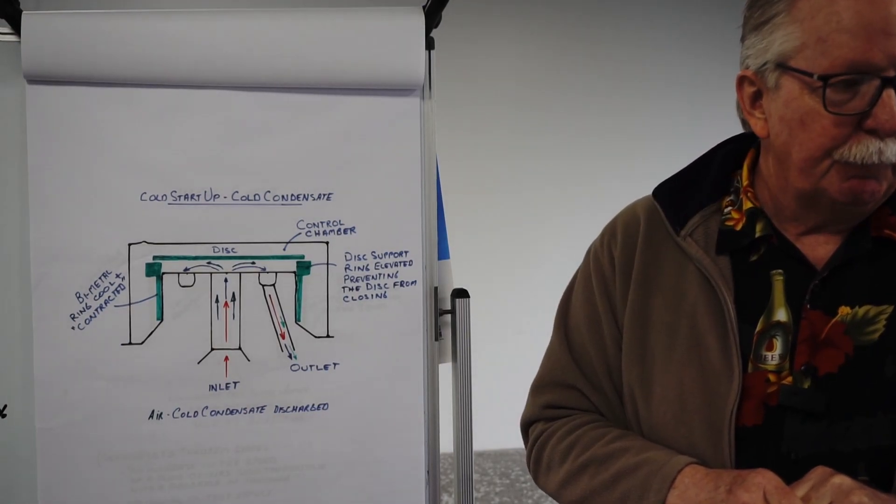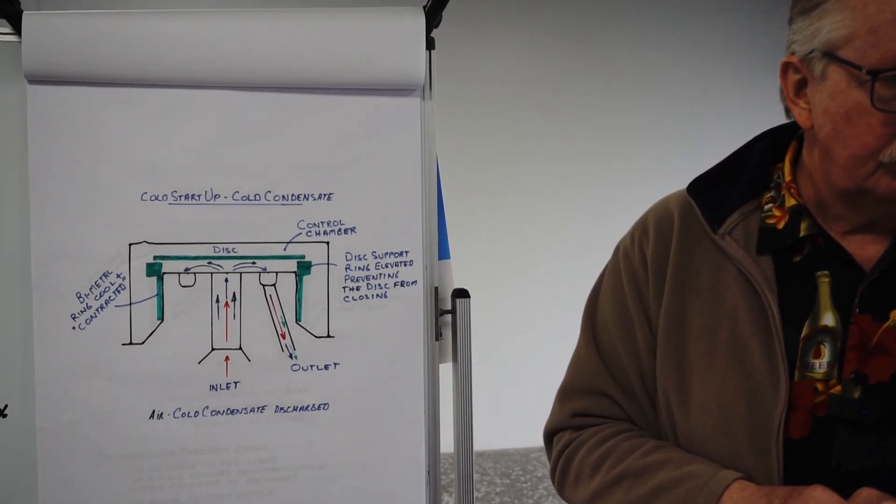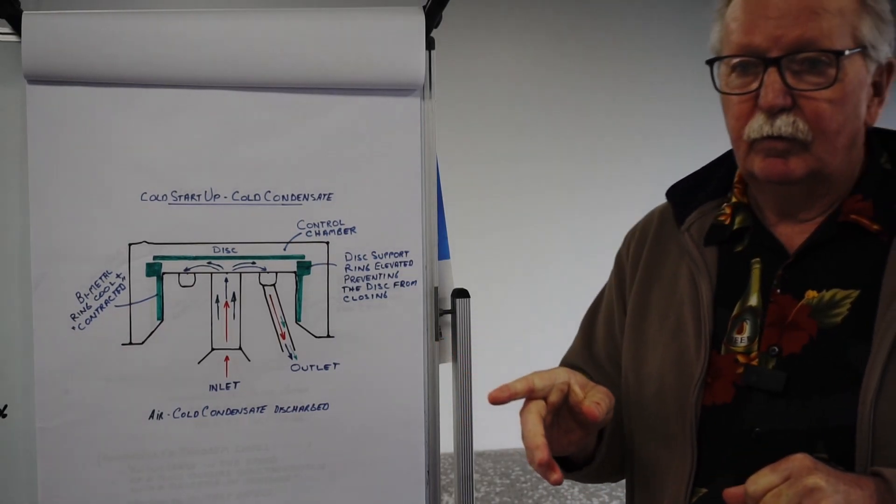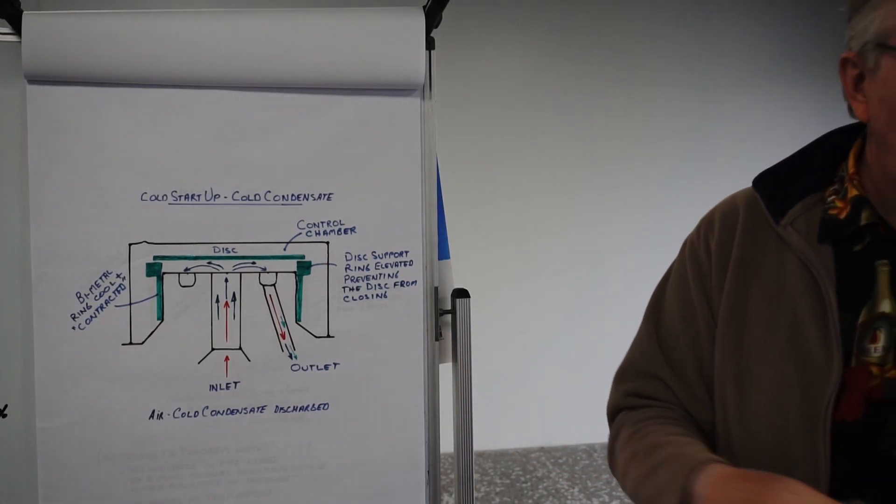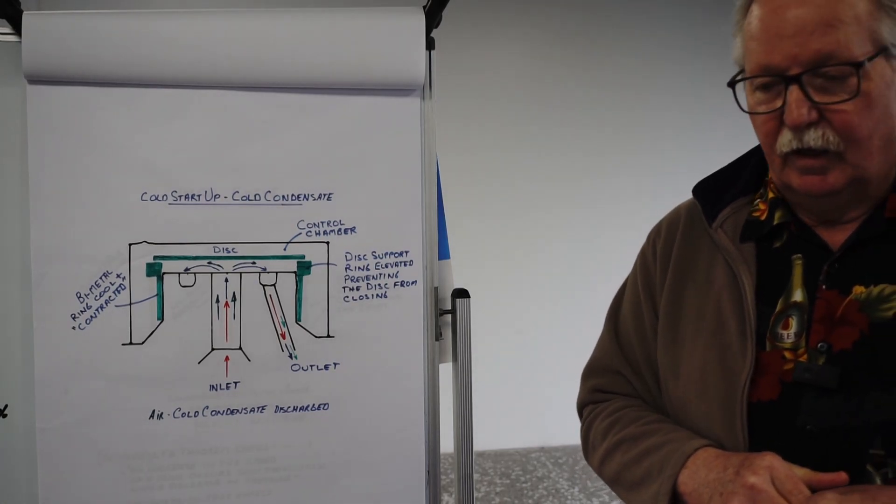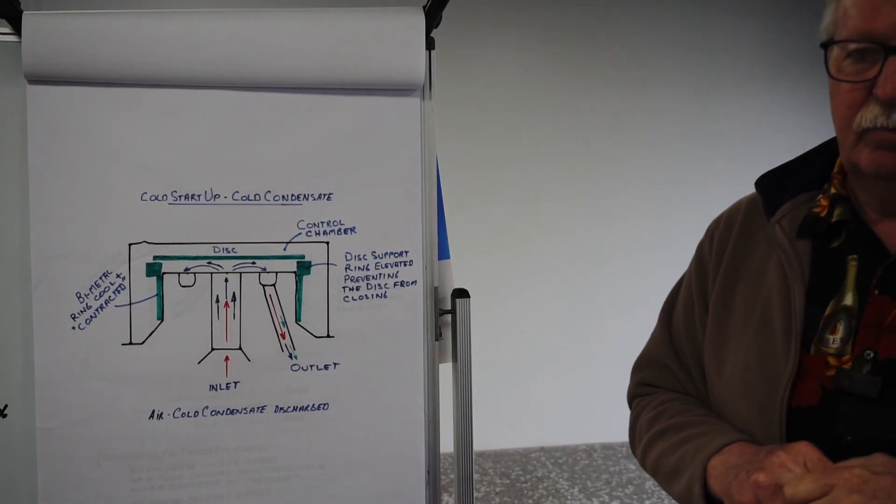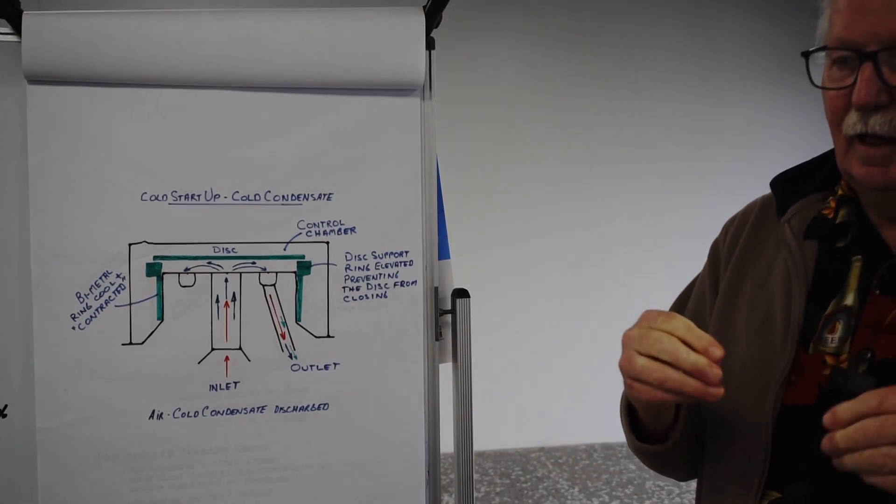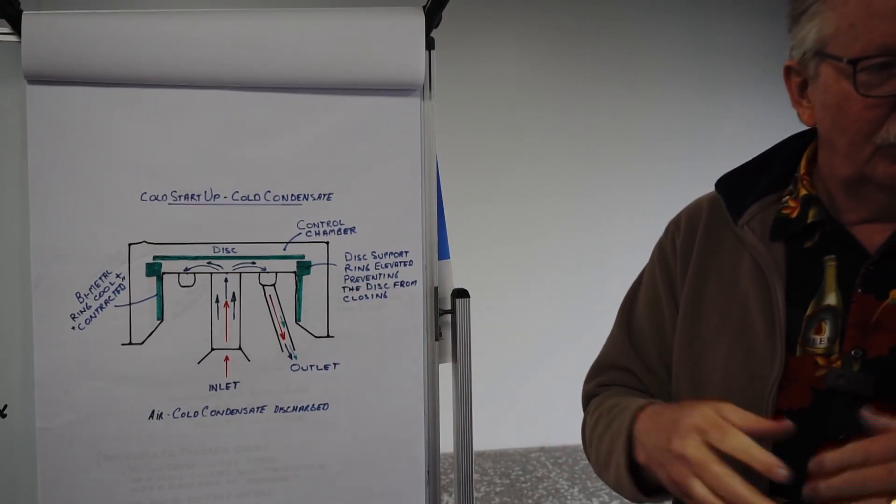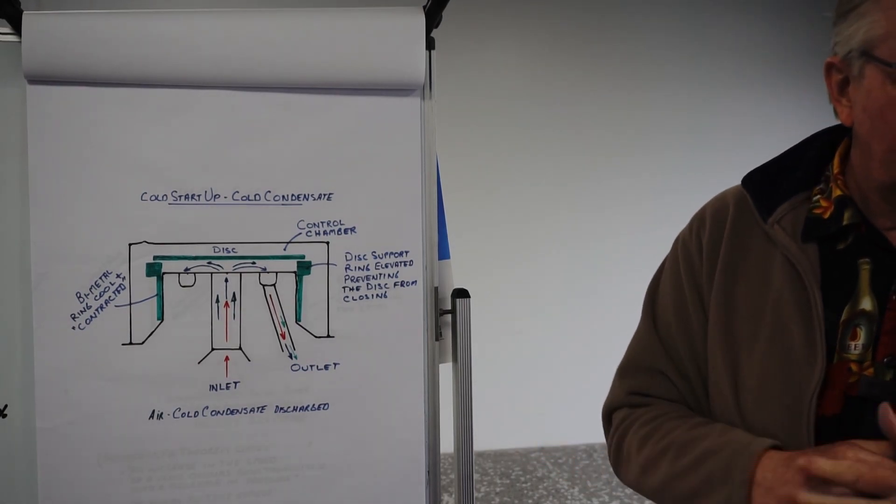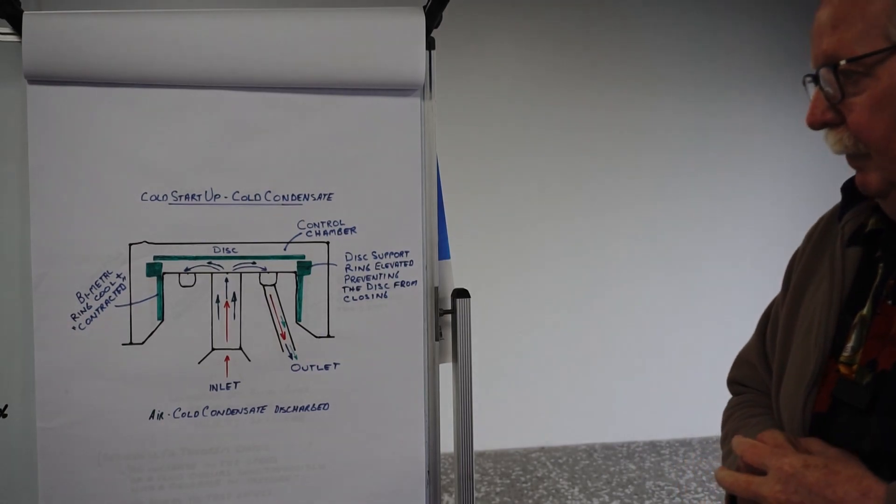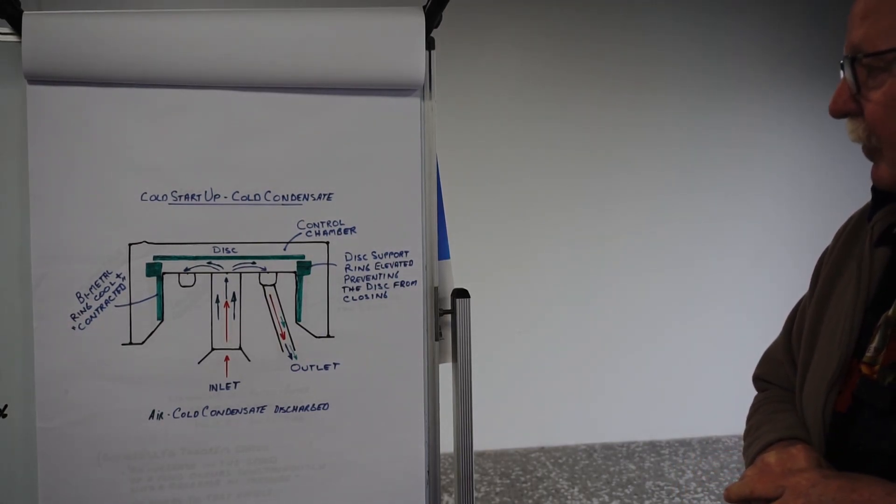If you've got an application that's got a lot of scale build up, would this be the trap to use? This will help avoid scale build up because of its blast discharge. Scale is usually a chemistry issue, but if there's scale building up and dirt and other bits accumulating somewhere, this can tend to suck it out. It all depends how it's installed, but yeah, it could help with that environment.